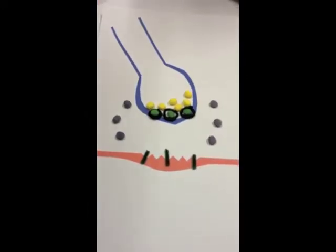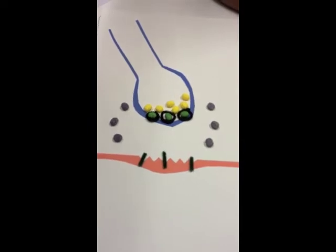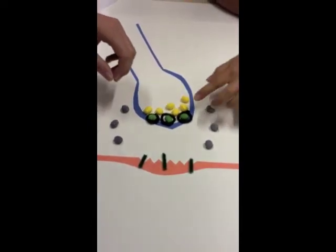From there, the acetylcholine fuses with the cell membrane and is released into the synaptic cleft through exocytosis.